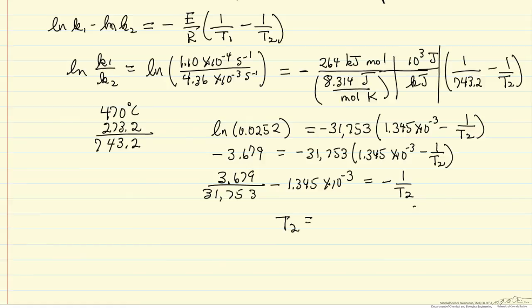Now I can convert this back to centigrade by subtracting, and my temperature to have this rate constant would be 540 Kelvin.